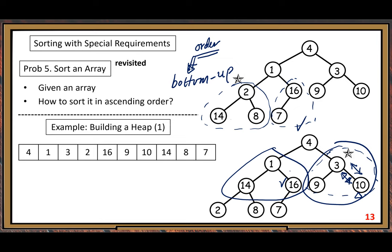But we need to estimate how much the building cost is. The building cost is important. Because if this building cost is too expensive — for example, if it is as bad as big-Theta of n² — then it's not worth it.